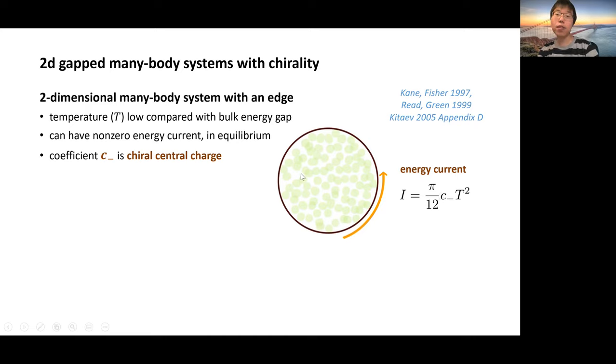There is a universal formula for this energy current. The energy current I is equal to π/12 times the chiral central charge times temperature T squared. This phenomena, for those of you who are familiar, some of you may be more familiar if I mention other names of this chiral central charge. It's also known as the coefficient for thermal Hall conductance, which is something people try to measure recently. And C- is also sometimes known under the name of gravitational anomaly, coefficient of gravitational anomaly.